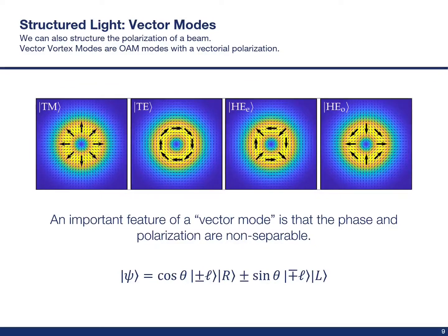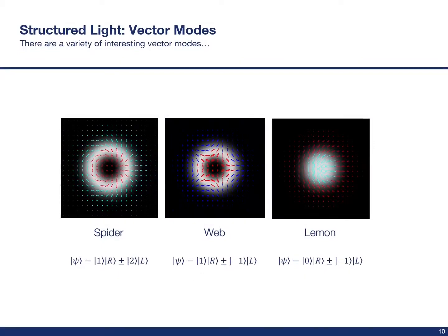A particularly interesting type of structured light are called vector modes. These are spatial modes, much like what I've shown you already, except they also have a spatially varying polarization. Most of the time when we refer to spatial modes, we assume a uniform scalar polarization. Vector vortex modes are shown here. These have many interesting properties, one of which is that OAM phase and polarization, as described by the equation, are non-separable. By changing which modes we couple with which polarization, we can create interesting shapes in all three degrees of freedom. At this point, you're probably wondering how to create these modes in the lab, so let's move on to that.